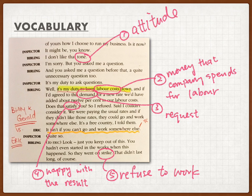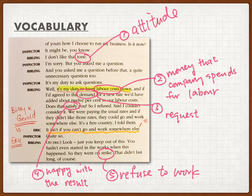Number four, 'satisfy' — if you're satisfied with something, you're happy with the result. Number five, 'strike' — a strike means workers refuse to go to work. Normally they will ask for something and refuse to go to work until it is given — that is a strike.